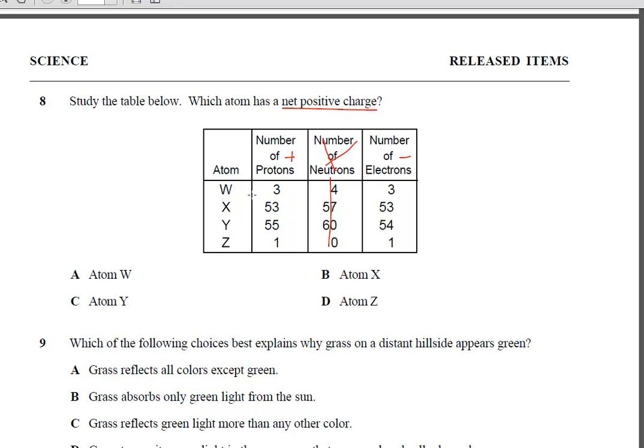So when we take a look at the table, we have an example here where we have 3 protons and 3 electrons. So that's 3 positives, 3 negatives, and that adds up to 0. 53 positives, 53 negatives, and that also adds up to 0.